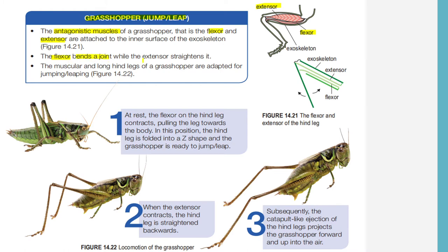The flexor bends a joint and the extensor straightens it. The concept here is the same as when we discuss locomotion in humans — when we walk, remember the biceps femoris and also the quadriceps femoris. The concepts are the same.